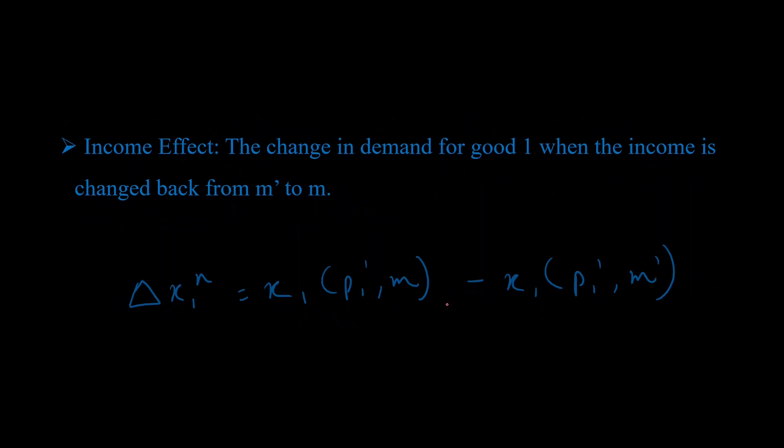Similarly, let's take a look at the income effect as well defined as the change in demand for good one when the income is changed back from M dash to M is denoted by delta XN. And you can calculate that by evaluating the demand at the new price P1 dash and the adjusted income M dash and subtracting that from the demand evaluated at again the new price. But, the original income.